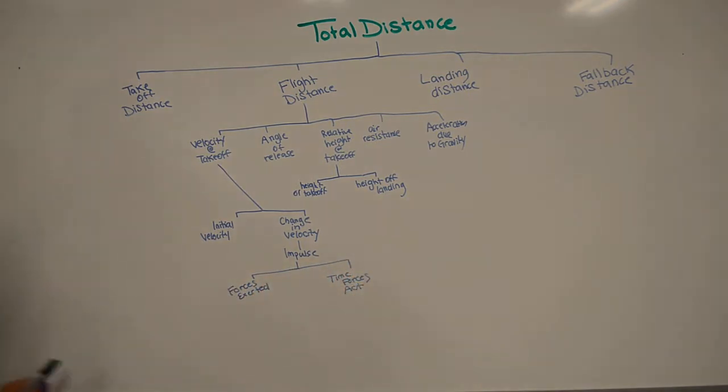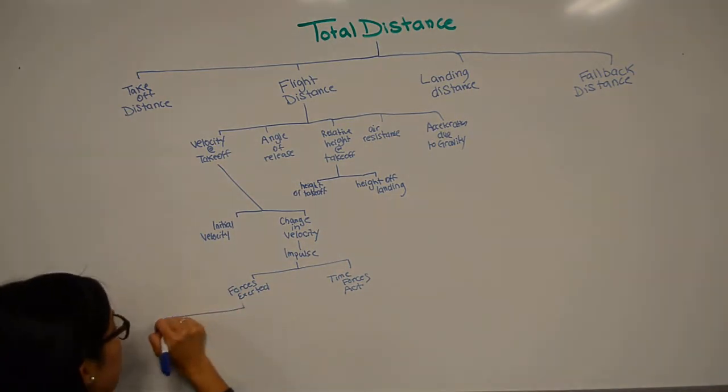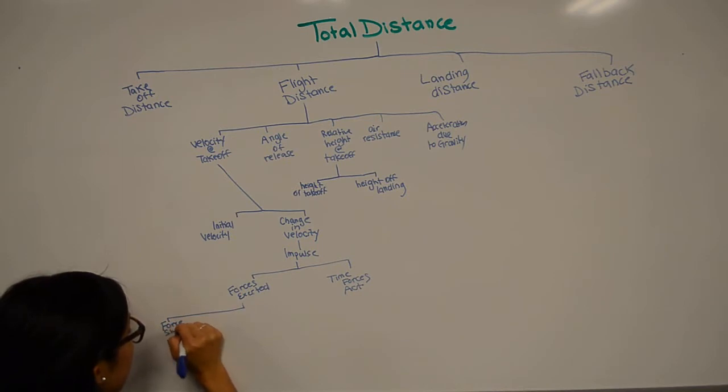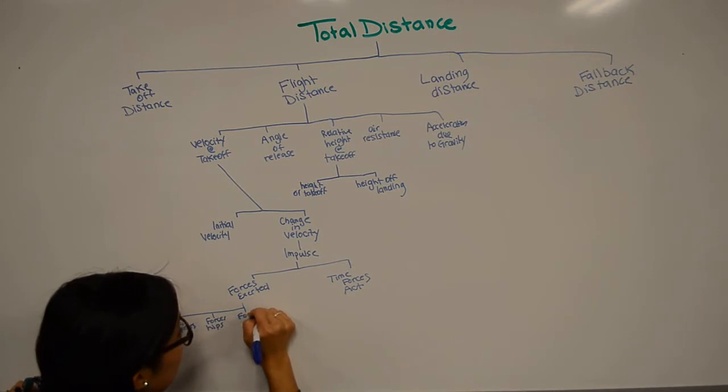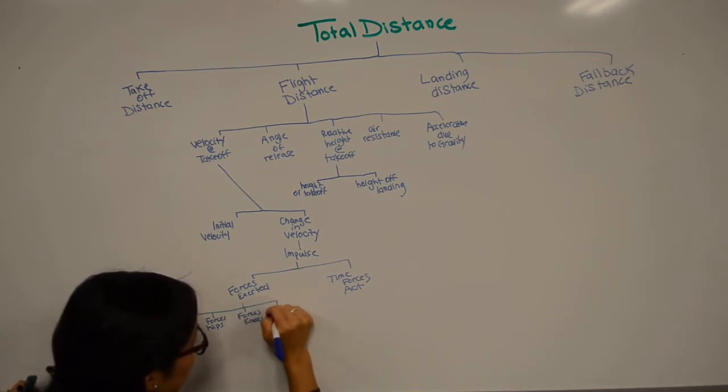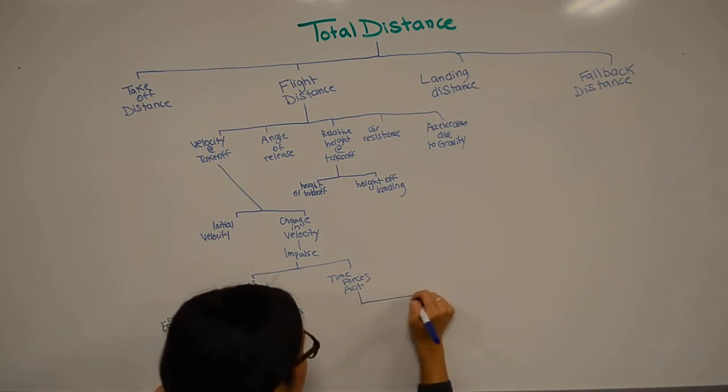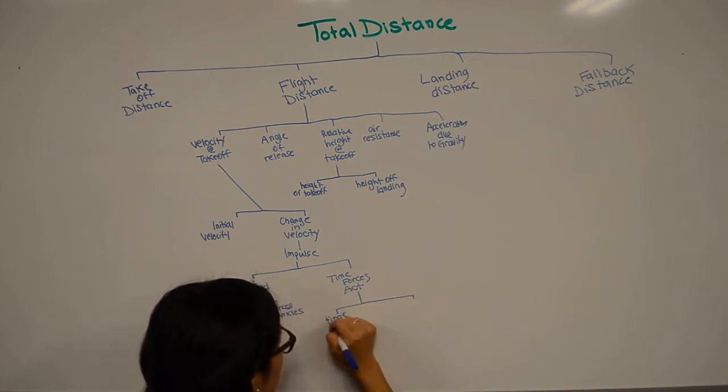By knowing our appropriate relationships, we can continue to expand our deterministic model. For example, forces exerted can be broken up into forces at the shoulders, the hips, the knees, and the ankles. While time that forces act can be broken up into time that forces start and the time that forces end. We're able to even take this one more step and break time up into each muscle group.